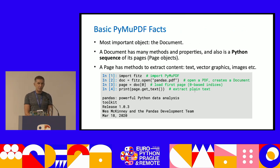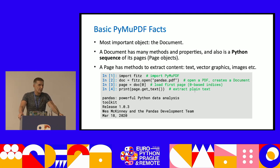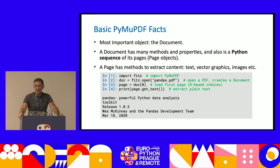PyMuPDF is a package downloaded more than 30 million times, approximately eight years old, with a goal of top performance and ease of use. The main class is a Document, which is a Python sequence of its pages. You can do something like: import the package as 'fitz', open a PDF giving a document called 'doc', then access the first page with 'doc[0]', and print the text of that page with a single method call.